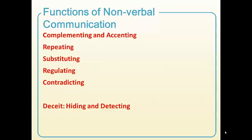Sometimes it's a substitution — rather than say 'I don't know,' I might just shrug. It can also regulate what I'm saying: the tone of my voice might amplify or soften what I'm saying. And very often it contradicts — I might be saying pleasant, polite words, but my tone and expression send the message that I'm not actually that relaxed. For these reasons, nonverbal communication can be used to hide deceit, but it can also be picked up as a way of detecting deceit.